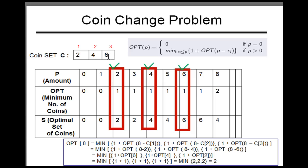Eight can be broken down into two denominations: six plus two equals eight, or four plus four. We can use one two-dollar coin and one six-dollar coin, or two four-dollar coins — either way is two coins. Both solutions give two denominations, so both are equally optimal. For this example, we chose two four-dollar coins.